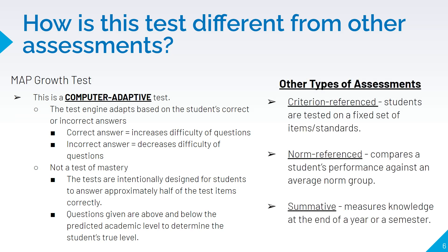Other types of assessments we use are criterion-referenced, which are tests of mastery — a fixed set of items and standards to see if you have mastered those skills. Norm-referenced compares a student's performance against an average norm group. Summative measures the knowledge at the end of the year or semester to see if your student is ready to move on to the next course or grade level.